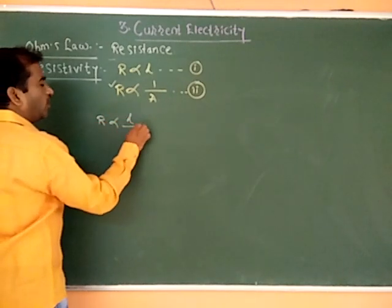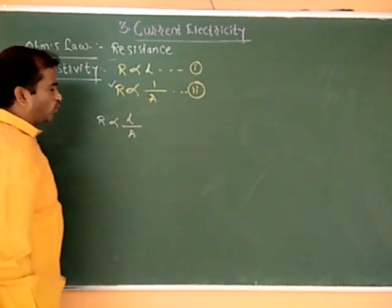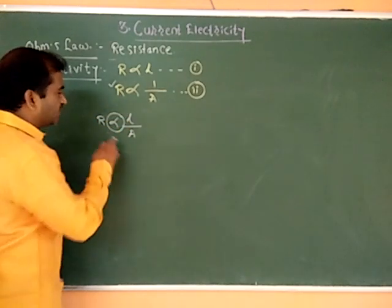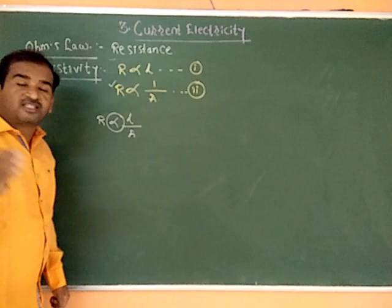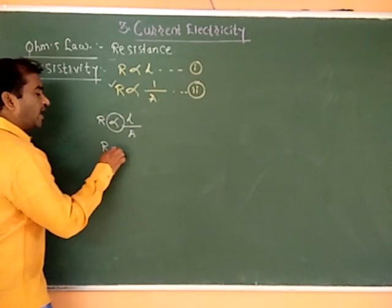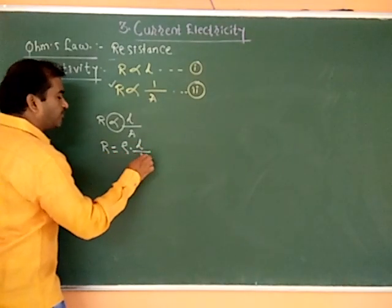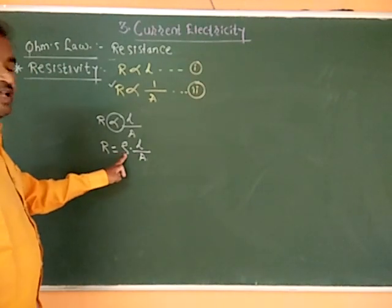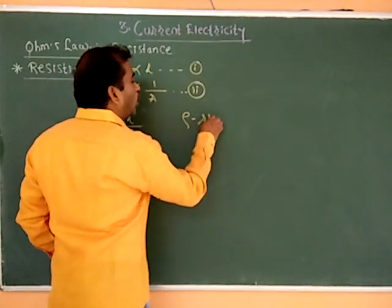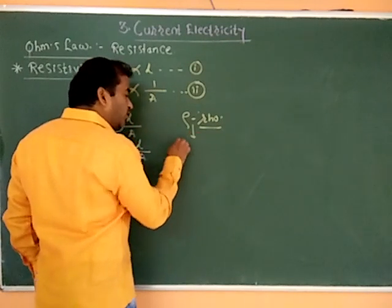R is directly proportional to the length of the wire and inversely proportional to the area of cross-section. Combining both equations, R is equal to rho times L divided by A, where rho is the proportionality constant known as resistivity.